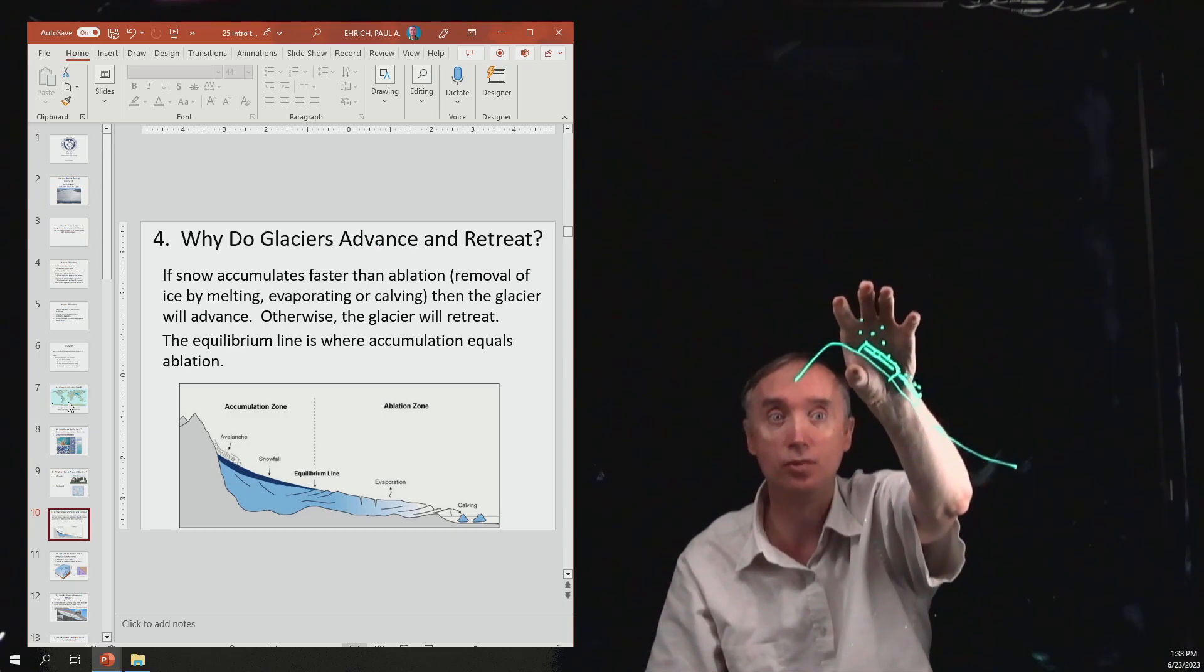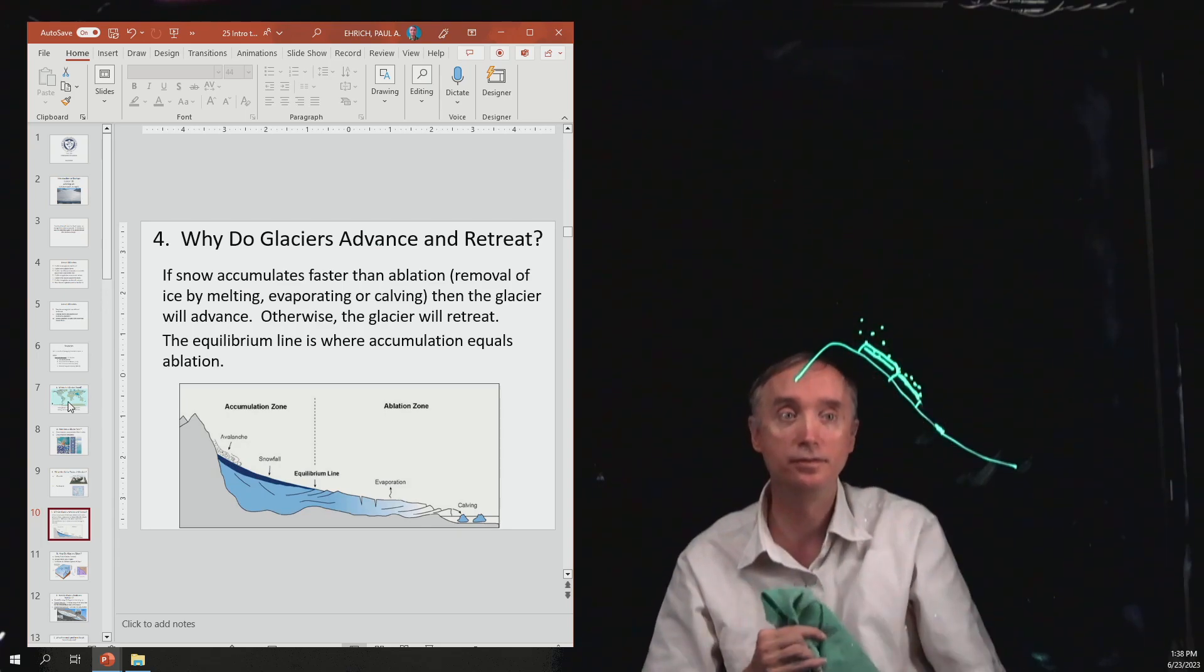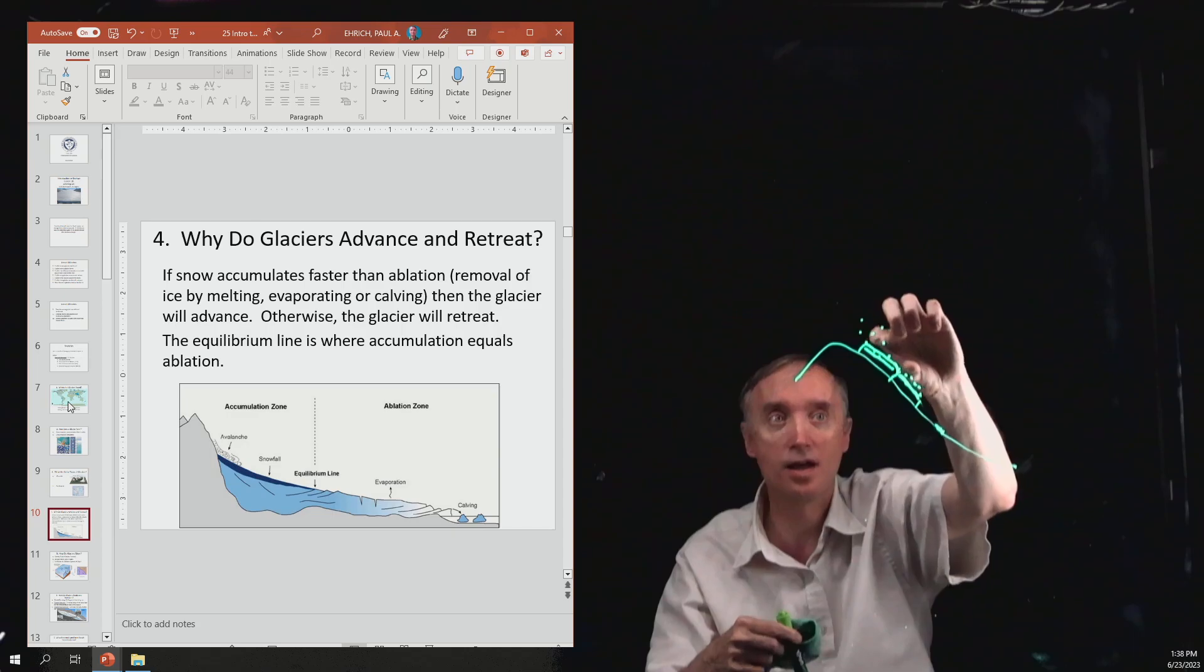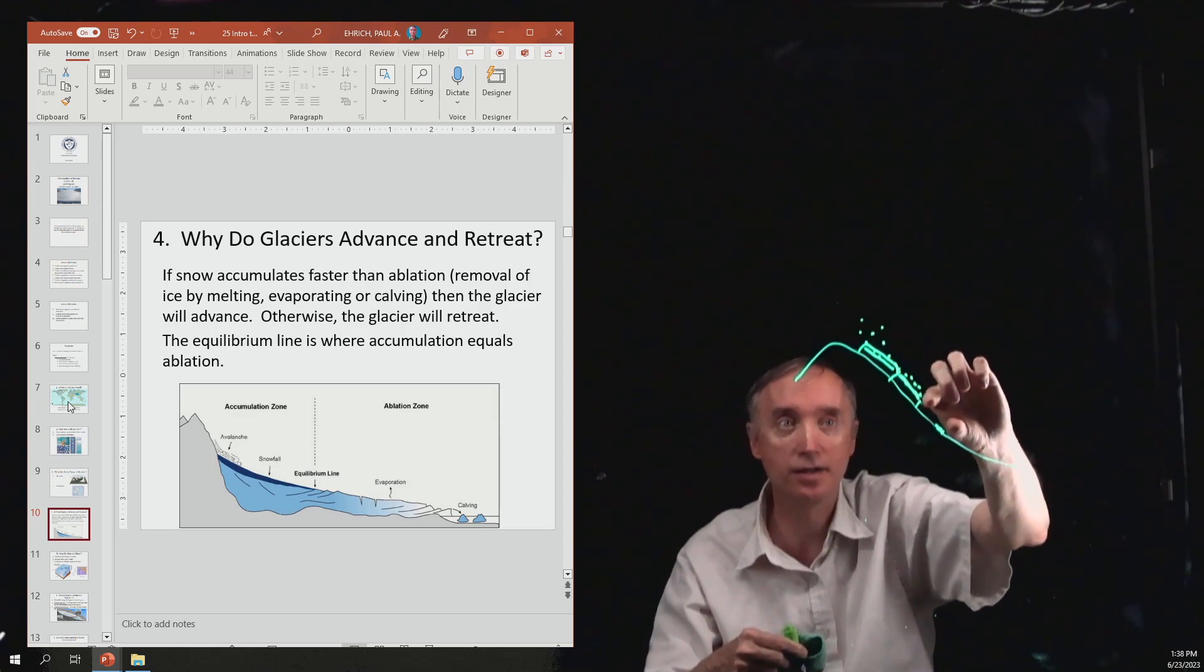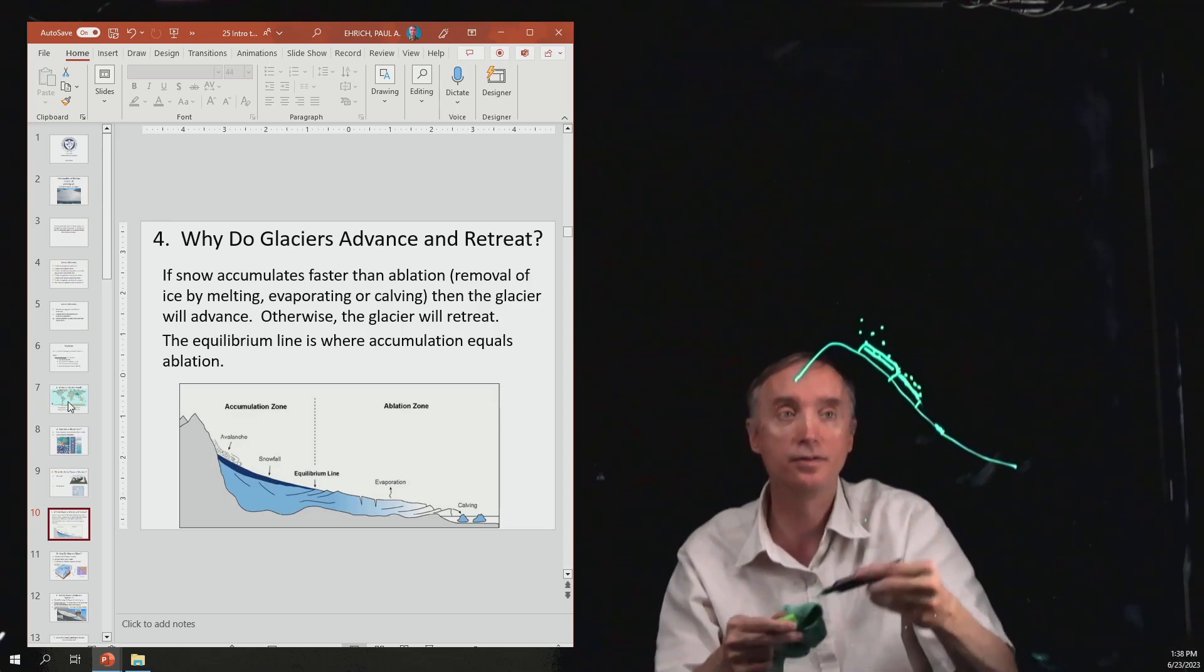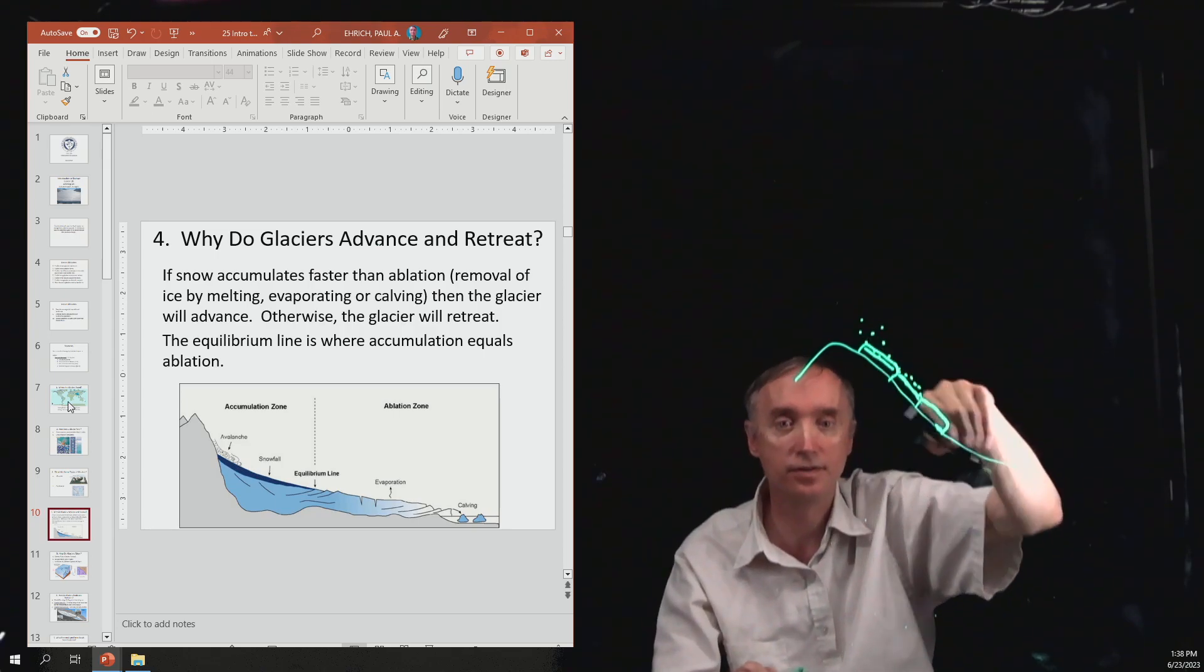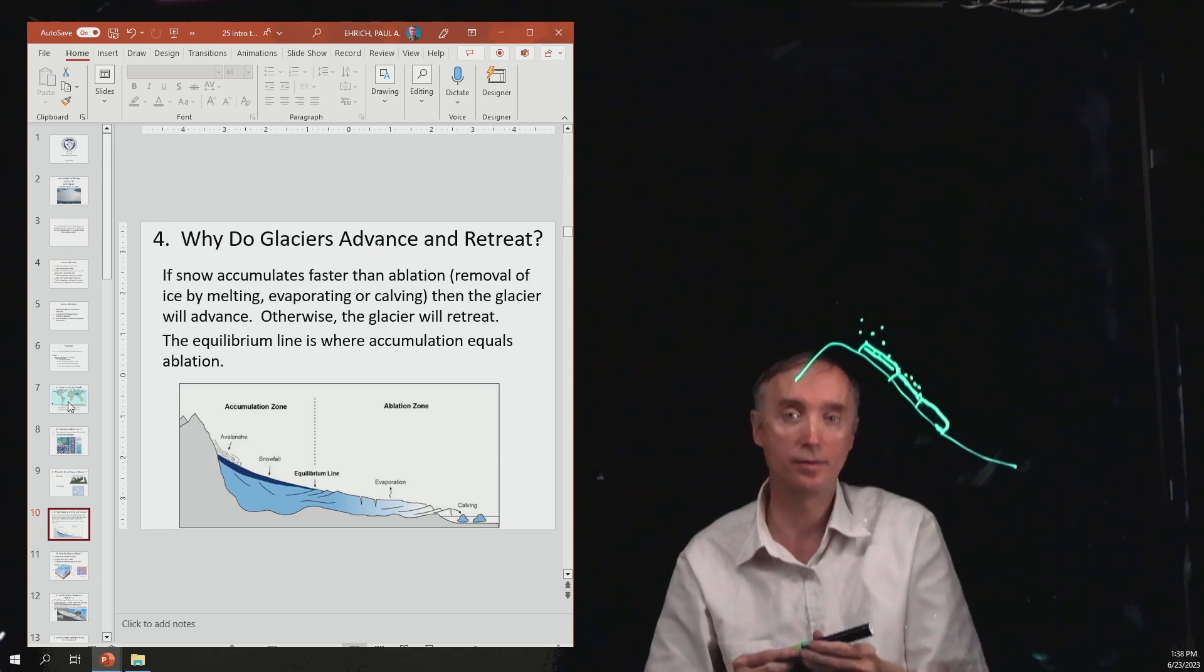On the other hand, if it snows more up here, then this part is going to slide down to here, and this part is going to slide down to here. So now the glacier is bigger and it has advanced downhill when that happens.